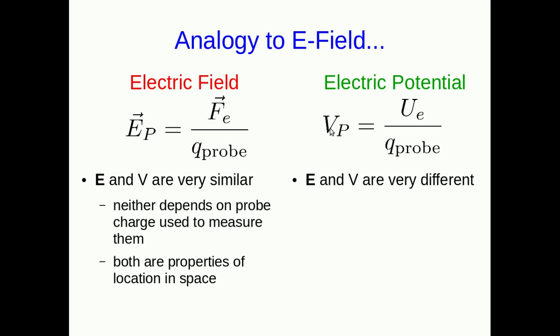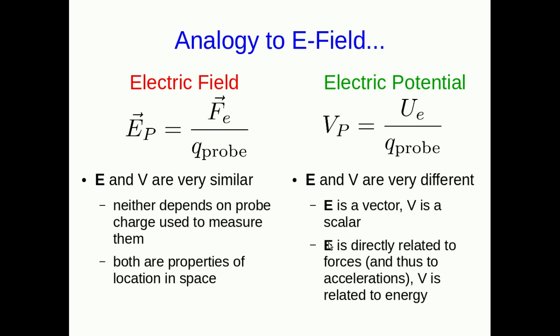On the other hand, the E field and the potential are very different from each other. First of all, the E field is a vector, but the potential is a scalar. Second of all, the E field is directly related to forces, which means it can tell you very quickly things about accelerations of particles as they move through this region of space. Whereas the potential is directly related to energy, which means it's often a quicker route for finding out about speeds.